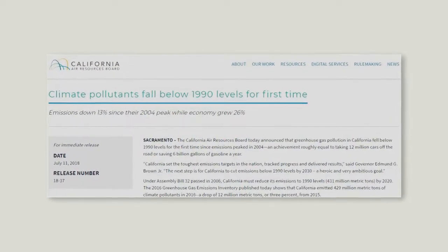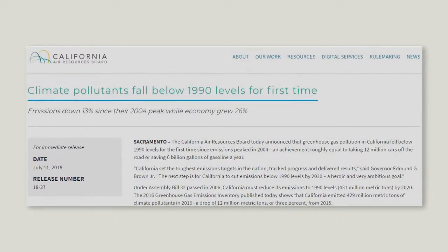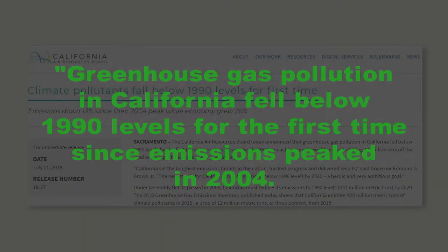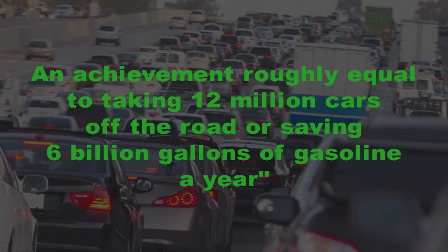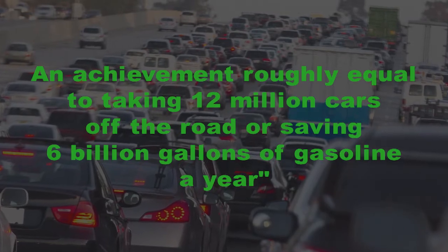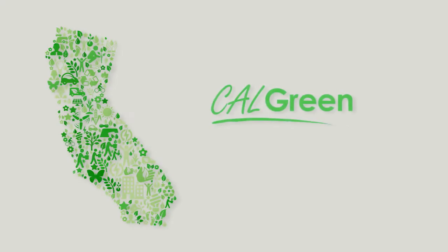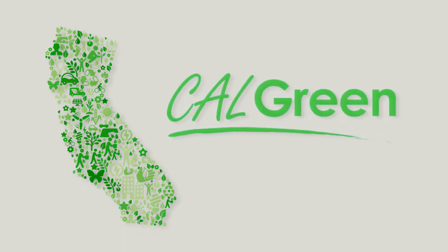On July 11, 2018, the California Air Resources Board announced that greenhouse gas pollution in California fell below 1990 levels for the first time since emissions peaked in 2004, an achievement roughly equal to taking 12 million cars off the road or saving 6 billion gallons of gasoline a year. The development of Cal Green has been an important step toward more efficient and responsible building design, which helped California meet the greenhouse gas reduction goal ahead of schedule.